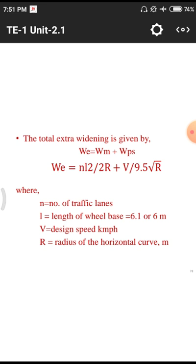So total extra widening WV = n·L²/2R + V/(9.5√R). Here, N is the number of lanes, L is the length of the wheelbase, V is the design speed, and R is the radius of the horizontal curve. The average wheelbase L is maintained as 6 meters, considering lorries and other heavy vehicles — since the road is designed for lorries, lighter vehicles will travel even more easily.